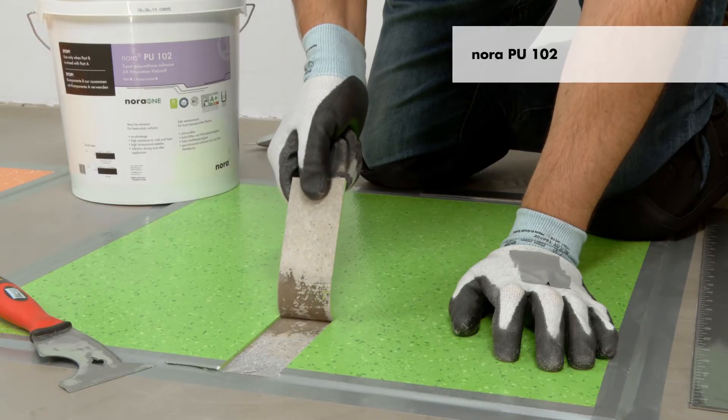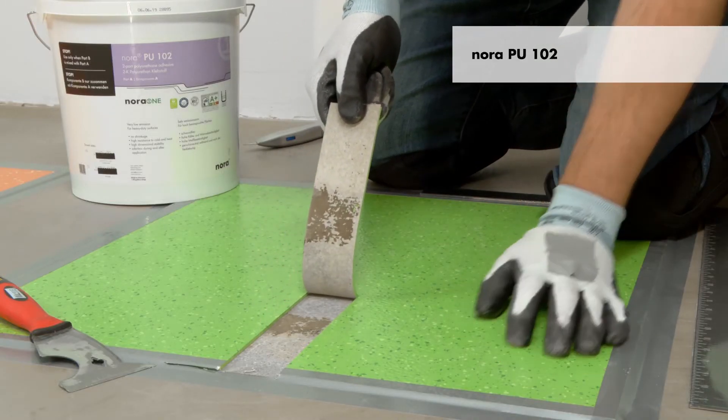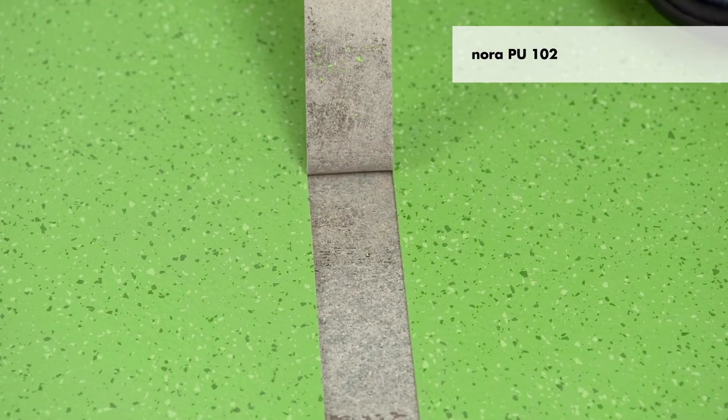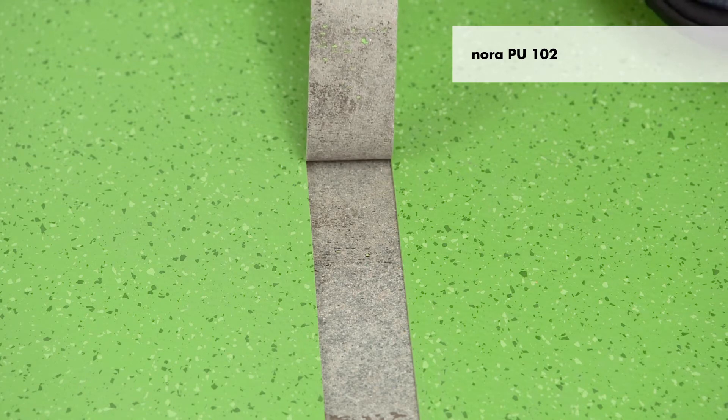For Nora PU102, the bond will break between the adhesive and the back of the flooring. This failed bond test shows substrate failure and must be corrected before beginning the flooring installation.